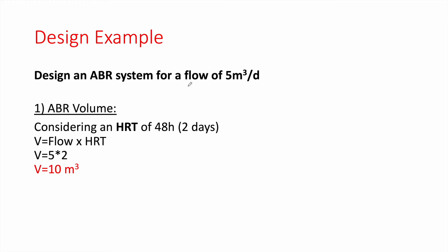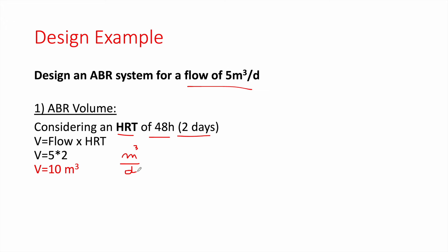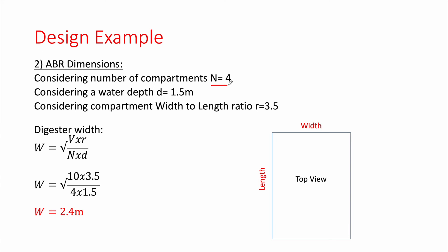In the practical example, we design an ABR system for a flow of 5 cubic meters per day. First, find the ABR volume by assuming a hydraulic retention time of 48 hours, which equals 2 days. Volume = flow × HRT = 5 m³/day × 2 days = 10 cubic meters. This is the total volume of all the vertical baffles. We then choose 4 compartments and a water depth of 1.5 meters.